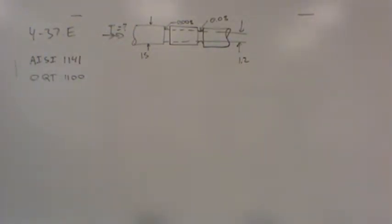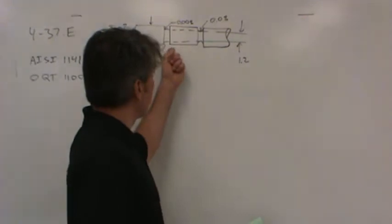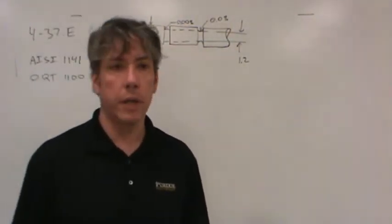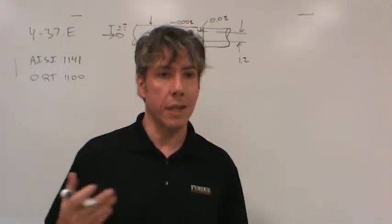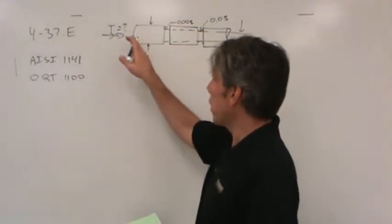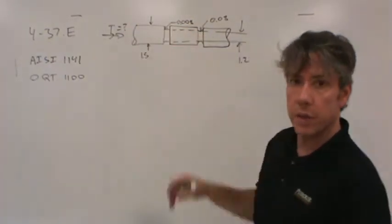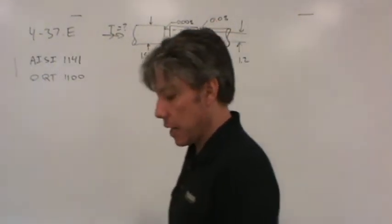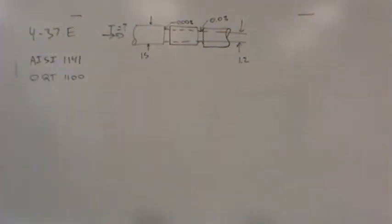The way I would approach this is to say, well, one of these grooves is going to give us a higher stress concentration than the other. Whichever one gives us the higher stress concentration is the one that's going to limit the amount of torque the shaft can take. Because if you put torque in on one side, it comes out the other. You're going to have the same torque throughout the entire length of the shaft. So let's figure out which one has the higher stress concentration factor.